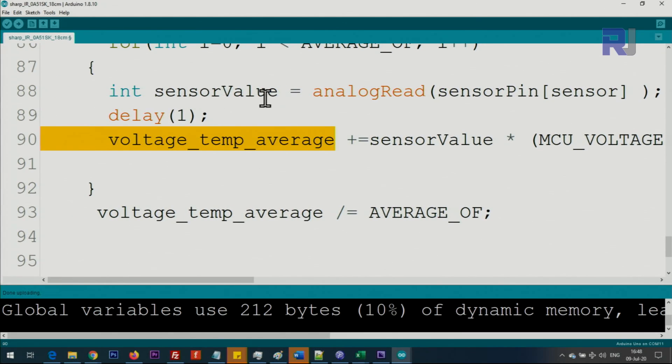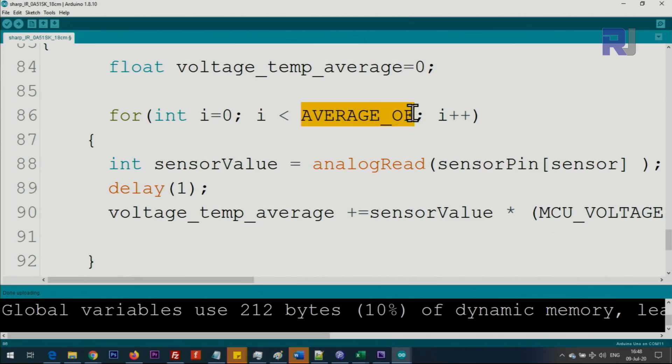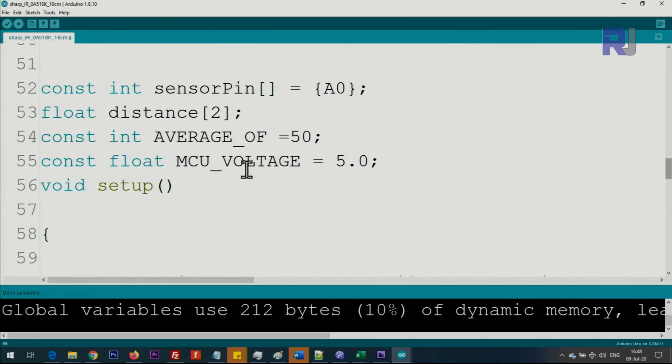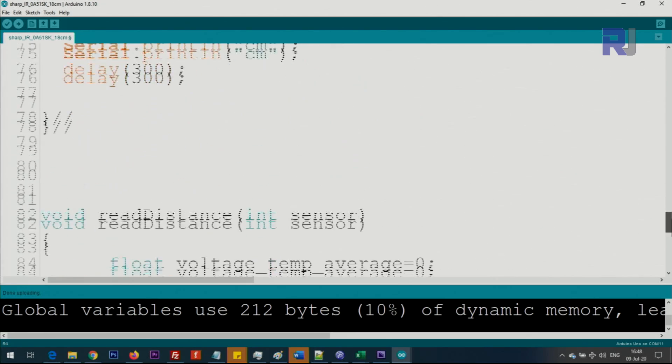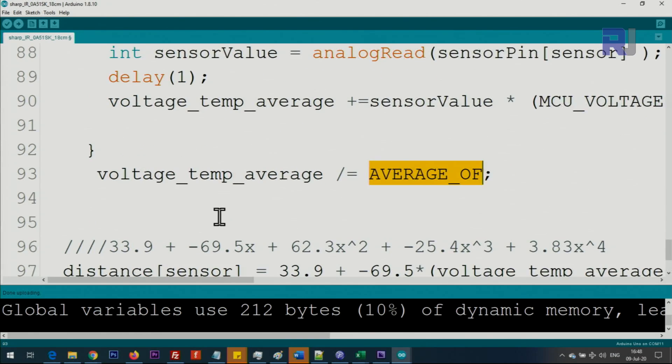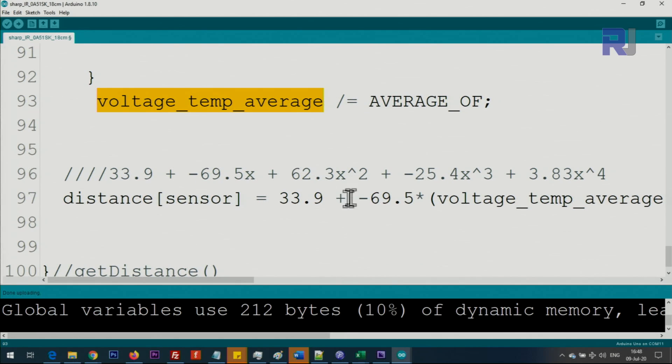We are adding by this number 'average_of', which is a variable we defined as 50. So we are getting 50 calculations and adding them. This becomes a huge number, but in this line we are dividing it by average_of, dividing it by number of iterations which is 50, so we get the actual average.